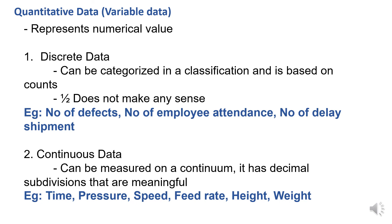In discrete data, a fraction has no meaning. For example, number of employee attendances — suppose 10.5, that doesn't make sense. We can convert units in continuous data; for example, we can change pressure units. This is the distinction between discrete data and continuous data.